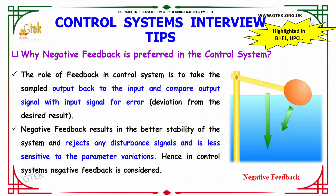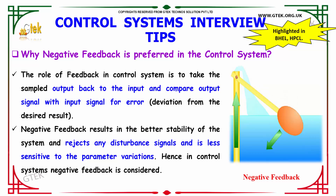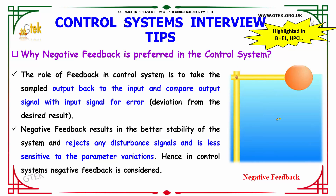Why is negative feedback preferred in the control system? The role of feedback is to take the sampled output, feed it back to the input, and compare the output signal with the input signal for error. Negative feedback results in better stability of the system, rejects any disturbance signals, and is less sensitive to parameter variations. Hence, in control systems, negative feedback is considered.